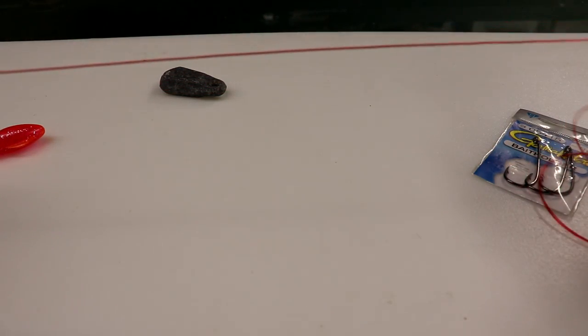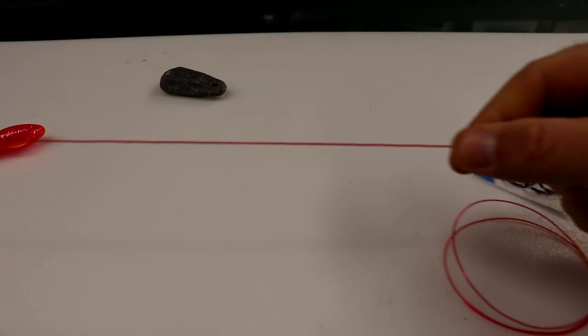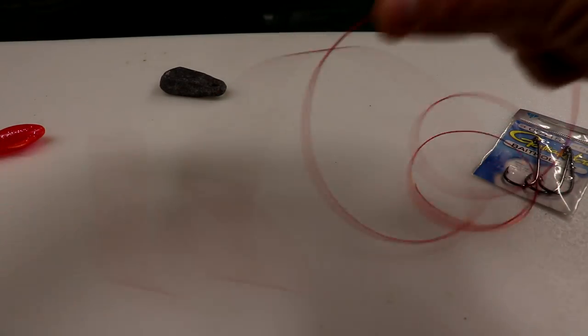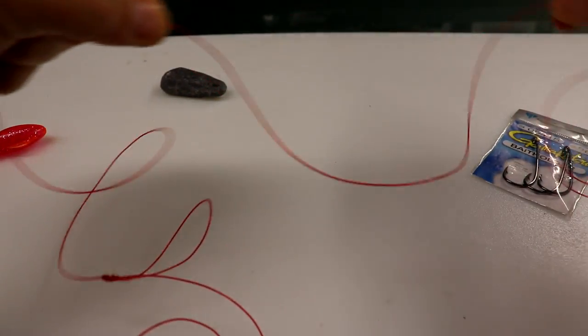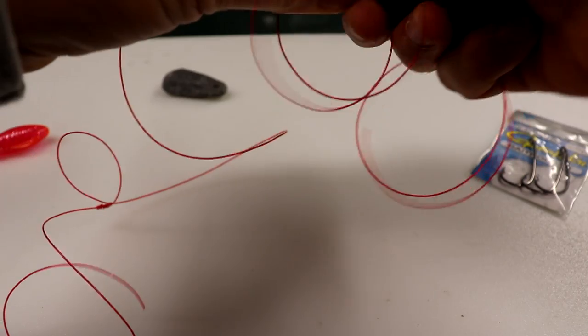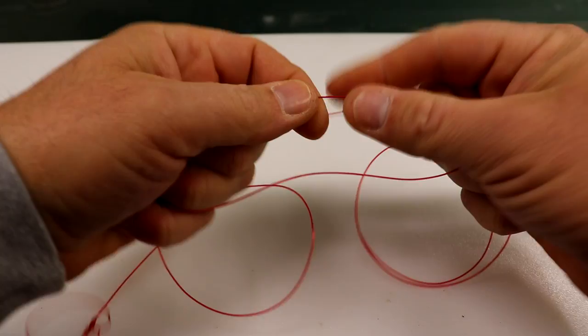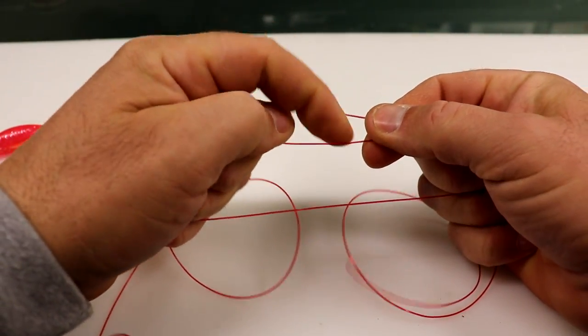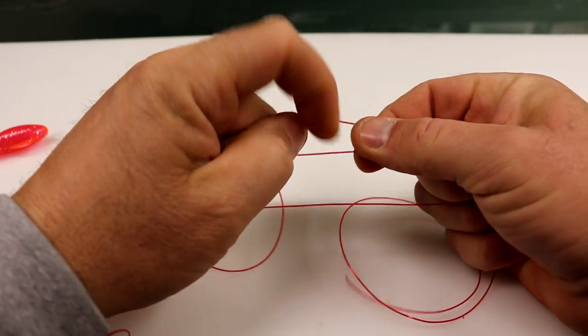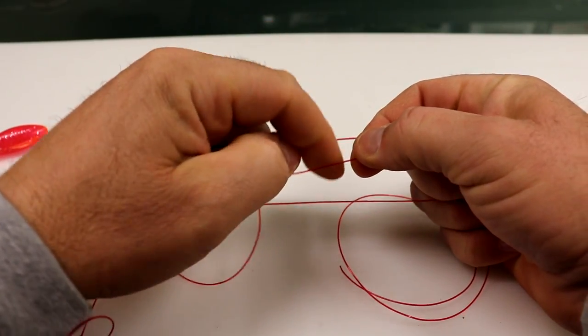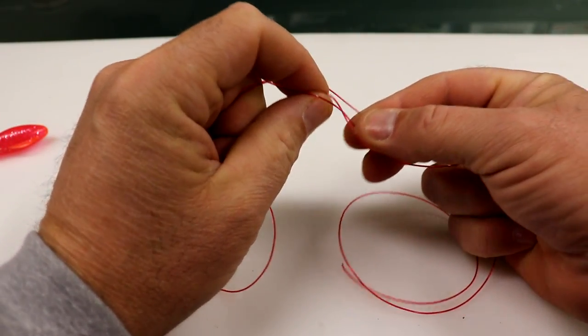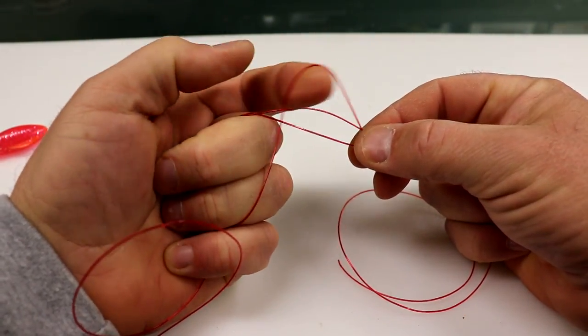Then you're going to come up a little, say about a foot and a half up, maybe two feet up, and you're going to do your next loop. You can adjust, you can make them bigger, smaller however you want it. And again, six turns for the dropper loop.